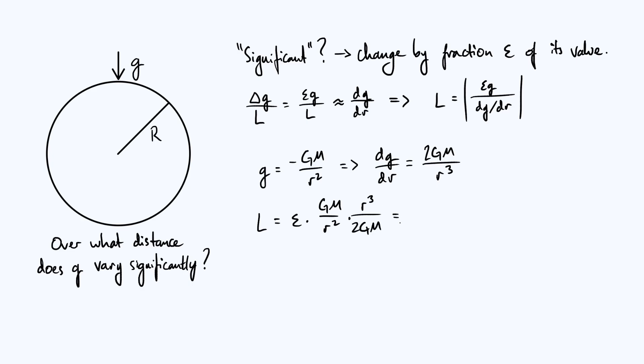And then well the GM's cancel, which is nice, and the r squared's cancel, and you're just left with a factor of r on the top, and this all becomes just epsilon r divided by 2.